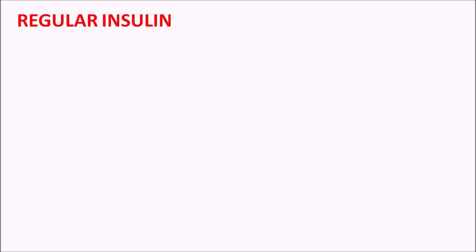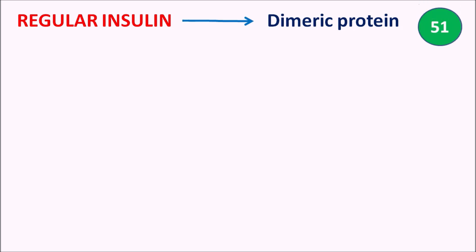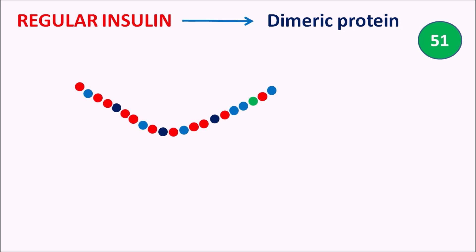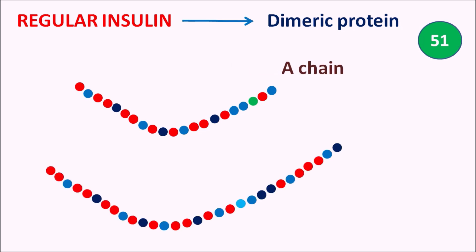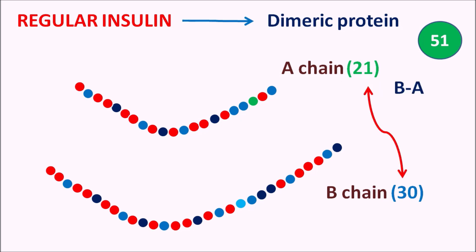Because of advanced technology, we now have a number of human insulin preparations with different pharmacokinetic parameters. Regular insulin is a dimeric protein made up of 51 amino acids, having two chains: the A chain and the B chain. The A chain has 21 amino acids and the B chain has 30 amino acids. The difference between them is 30 minus 21, which equals 9.